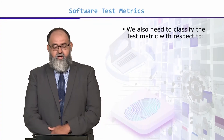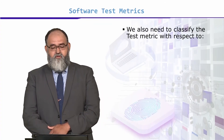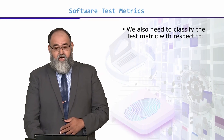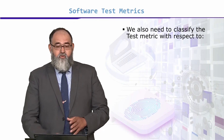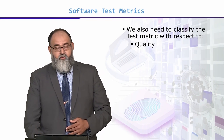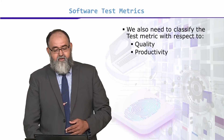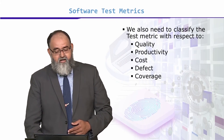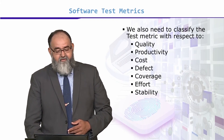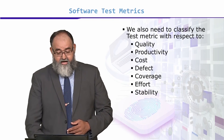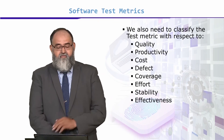We need to classify test metrics. We are going to classify test metrics with respect to: quality, productivity, cost, defect, coverage, effort, stability, and effectiveness.